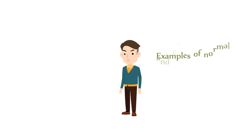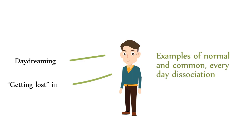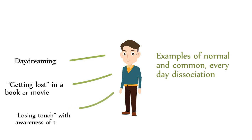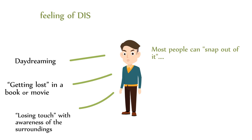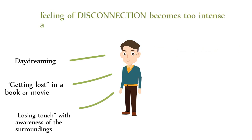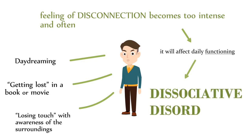Examples of normal and common everyday dissociation are daydreaming and getting lost in a book or movie, all of which involve losing touch with awareness of the surroundings. Usually, people can snap out of it easily. But when the feeling of disconnection becomes too intense and frequent, it will affect daily functioning, leading to Dissociative Disorder.